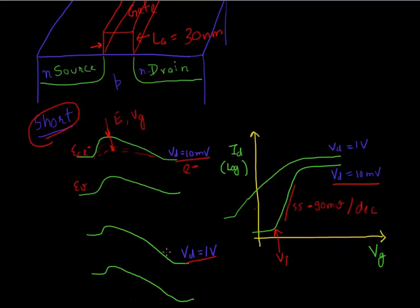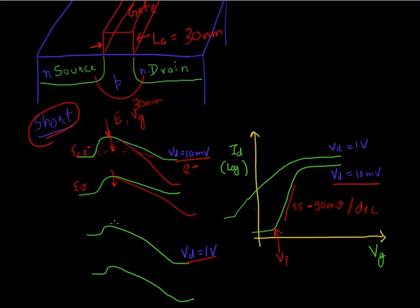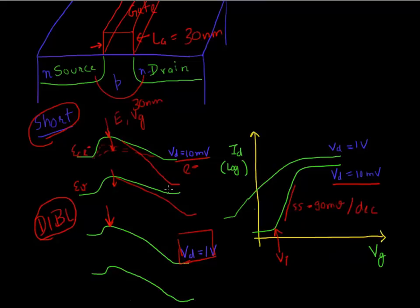But look at what happens when you apply a high drain voltage. Since the drain is now only 30 nanometers away from the source, applying a high voltage on the drain tends to affect the potential barrier for electrons to flow from source to drain. You see a lowering of this barrier — the drain is inducing a barrier lowering, which is known as drain-induced barrier lowering, or DIBL. The barrier is now being affected not just by the gate field, but also by the application of drain voltage.